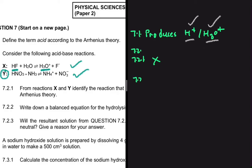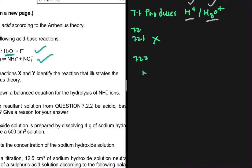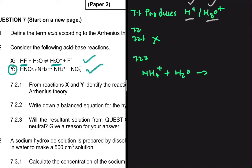For 7.2.2, write a balanced equation for the hydrolysis of NH4+ ions. We have NH4+ plus H2O. Is NH4+ an acid or a base? Looking at the reverse of reaction Y, NH4+ donates a proton to become NH3, so it is clearly an acid.